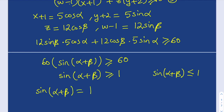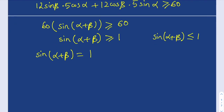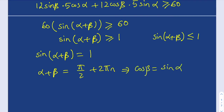But the sine of any angle is always less than or equal to 1 by definition. So these two inequalities together mean sin(α+β) = 1, which holds when α+β = π/2 + 2πn. Since α and β are complementary in this sense, cos β = sin α and sin β = cos α.